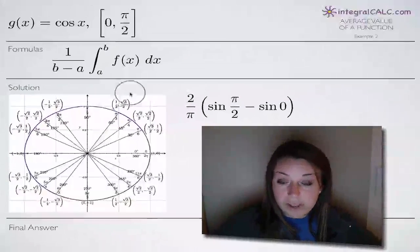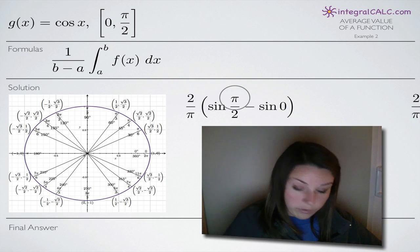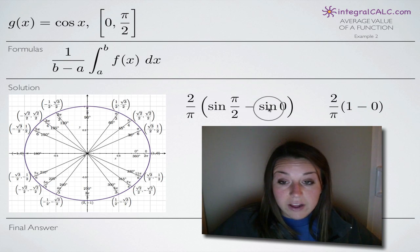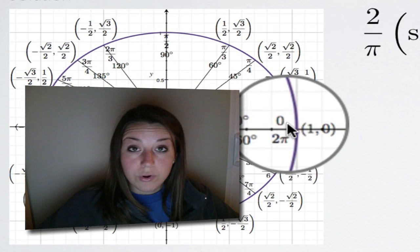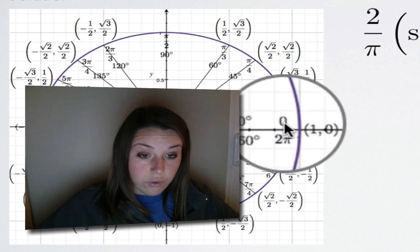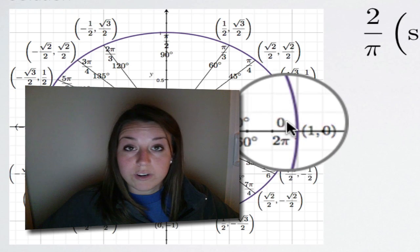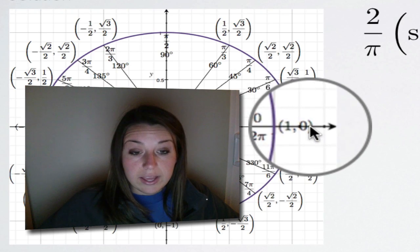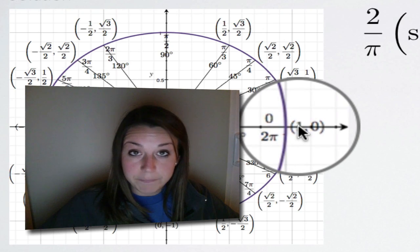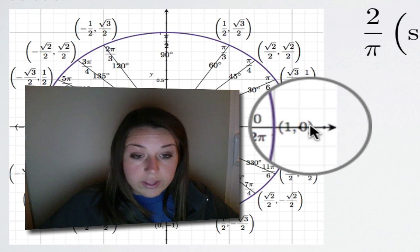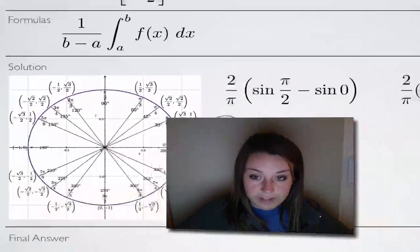So sine of pi over two is equal to one. For sine of zero, we go back to the unit circle and find the place where the angle is equal to zero — it's right along the x-axis. When using the unit circle, if you're looking for cosine you check the x-coordinate, and if you're looking for sine you check the y-coordinate. The y-coordinate at zero is zero, so sine of zero equals zero.